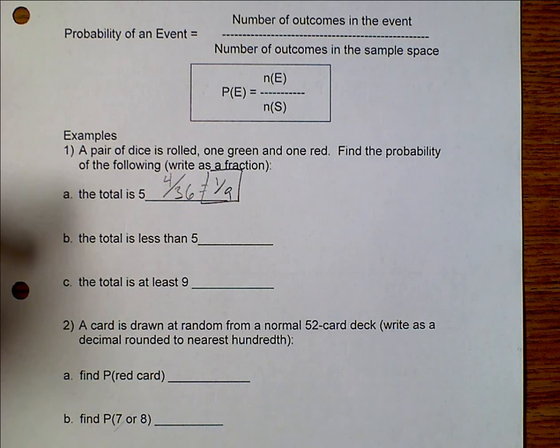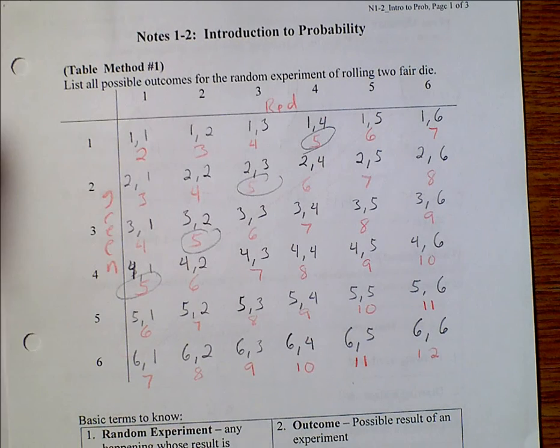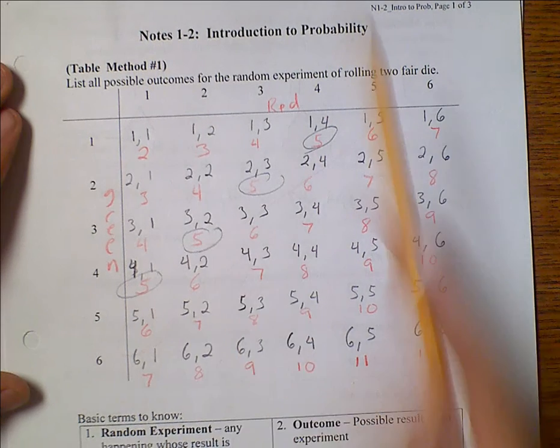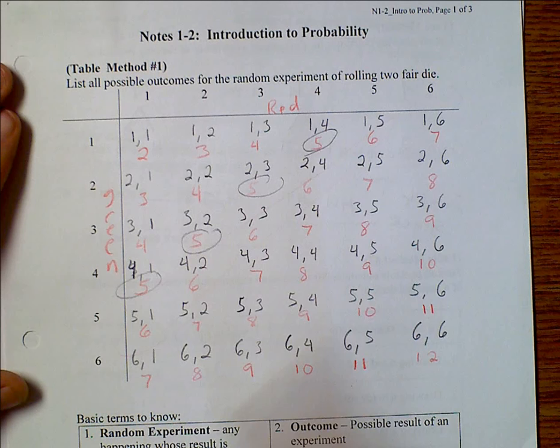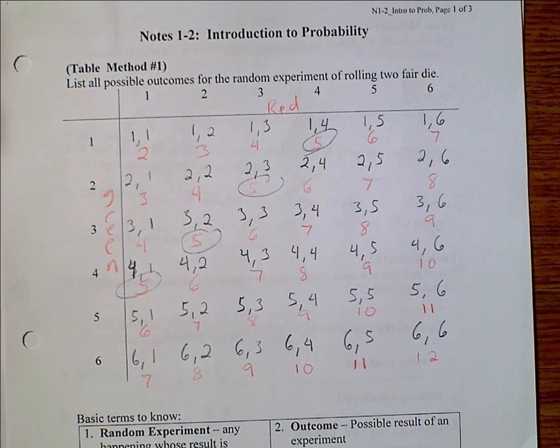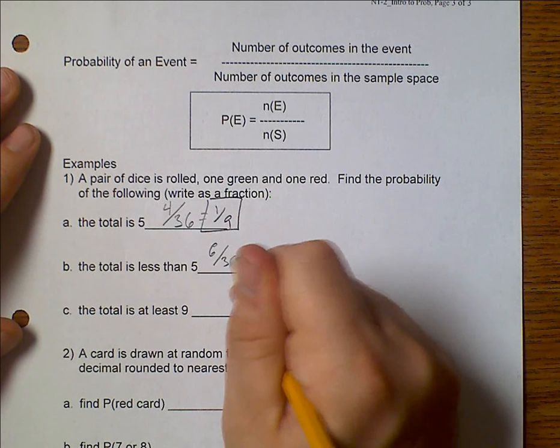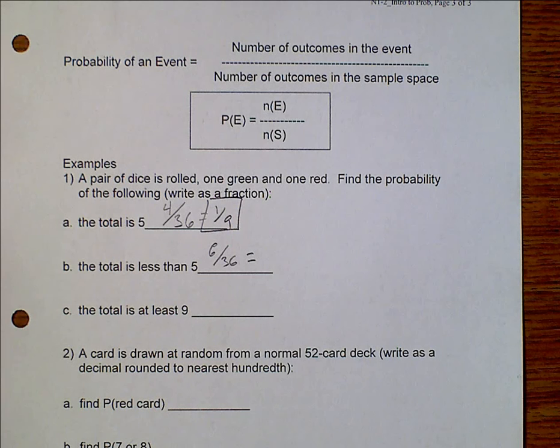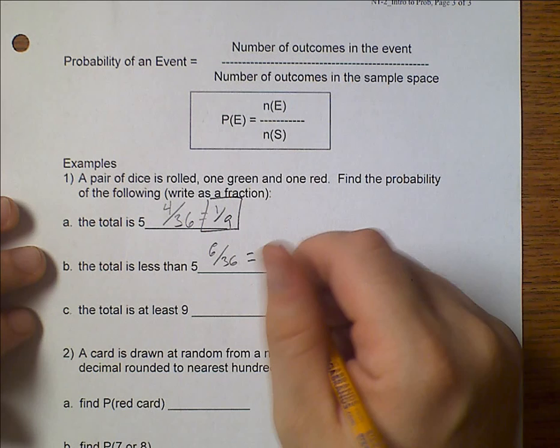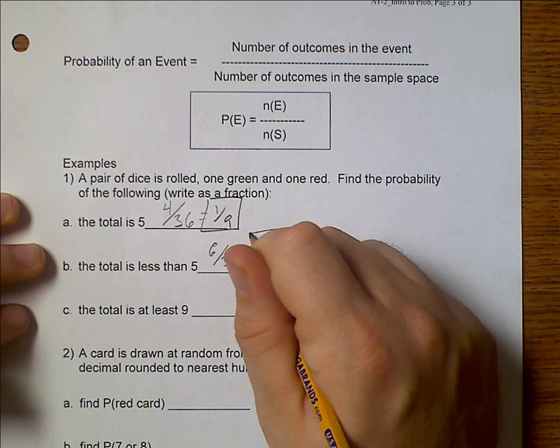Let's say our total is less than 5. So total being less than 5 would be anything to the left of this diagonal. So that would be 1, 2, 3, 4, 5, 6 of them are less than 5. So that would be 6 over 36, which you can use your calculator to simplify that. But hopefully you realize that 6 out of 36 is 1 sixth.